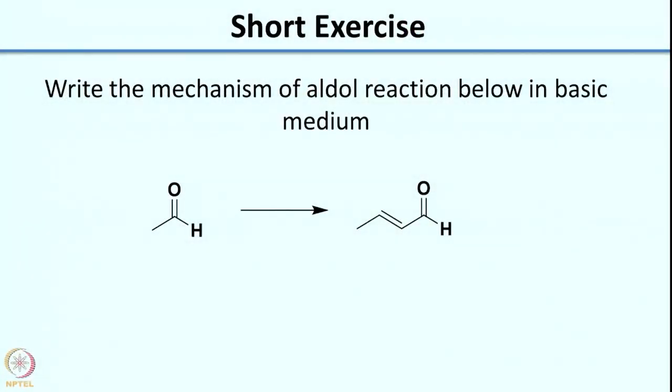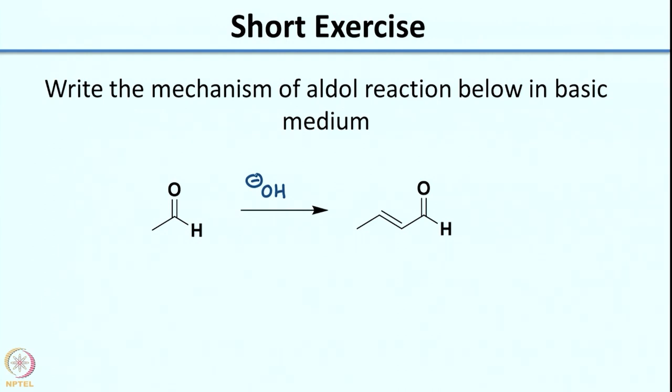Now that you have a good idea of what could be sources of electrons and what could be sinks, we should look at the entire picture and how you would actually write a reaction mechanism — pushing electrons from a source to a sink. As an exercise, write the mechanism of the aldol reaction in a basic medium. The medium is very important when writing reaction mechanisms. Please pause the video and try to write the mechanism in your notebook.